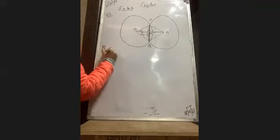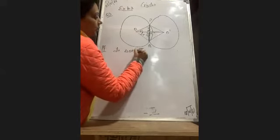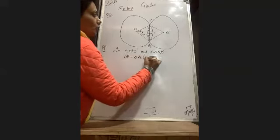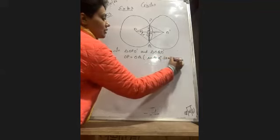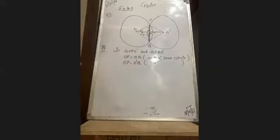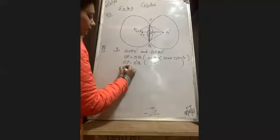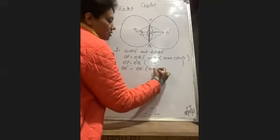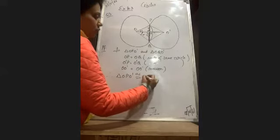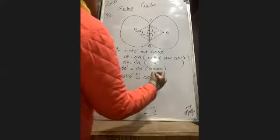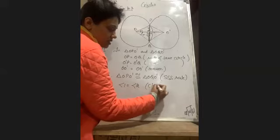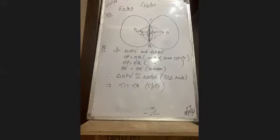Now writing the proof: In triangle OPO dash and triangle OQO dash — OP equals OQ, radii of same circle; O dash P equals O dash Q, radii of same circle; OO dash equals OO dash, common. Therefore triangle OPO dash is congruent to triangle OQO dash by SSS rule. This implies angle 1 equals angle 2 by CPCT. Kindly mark the angles in the figure — without marking, no marks will be given.